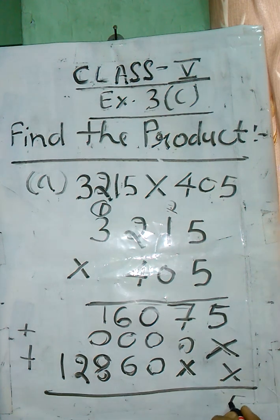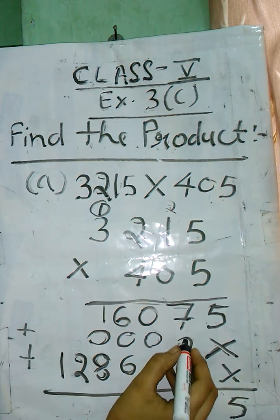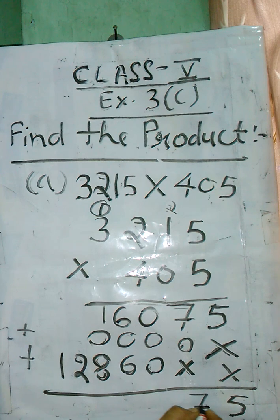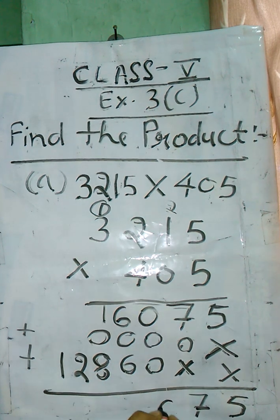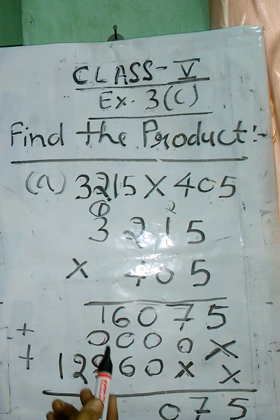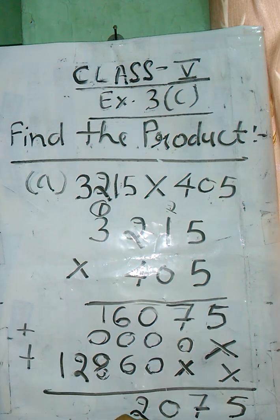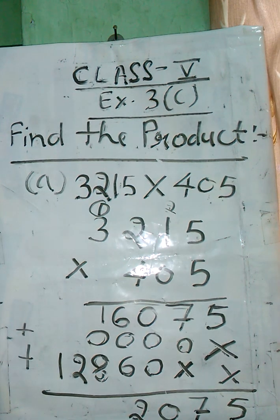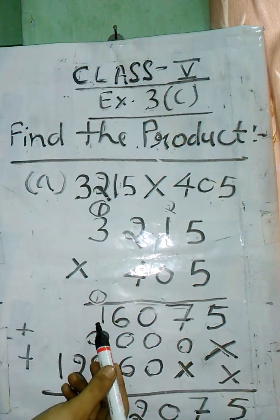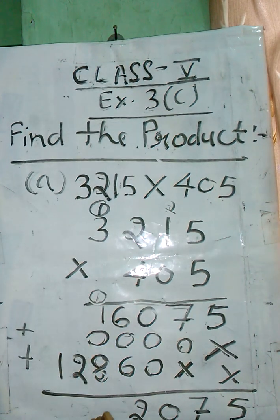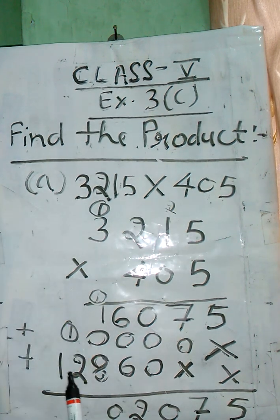5. Here we can also add 0. Then after, 0, because here whole is 0. Then after, 6 plus 0 is 6, and 6 plus 6 is 12. 12, write 2 at ones place, 1 carry forward. Here we add 8 plus 1 is 9, and 1 carry over 10. 1 carry over, 2 plus 1 is 3.